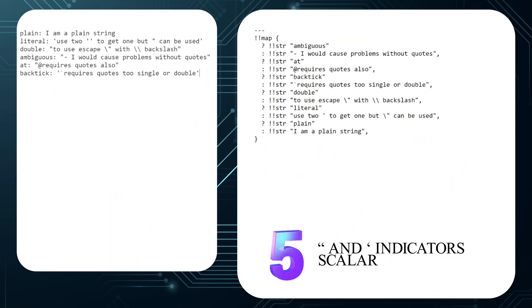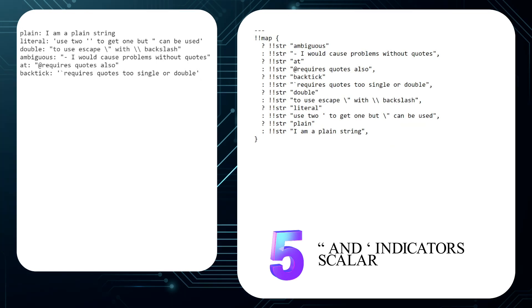Number 5: Scalar values can be written as plain — which is without quotes — double quoted, or single quoted. Quoting a value is helpful if the first character of the value can lead to ambiguity. When using double quotes, backslashes and double quotes must be escaped with a backslash. When using single quotes, backslashes and double quotes don't need to be escaped. However, to get a single quote, you must use two.